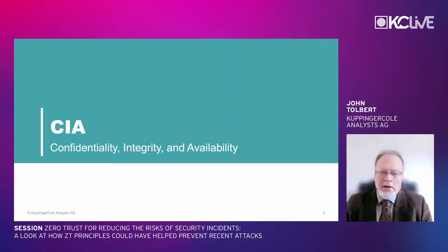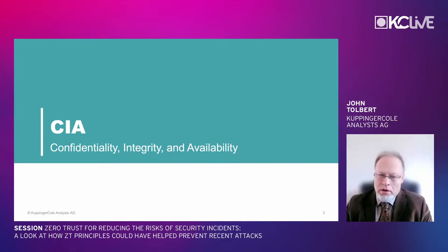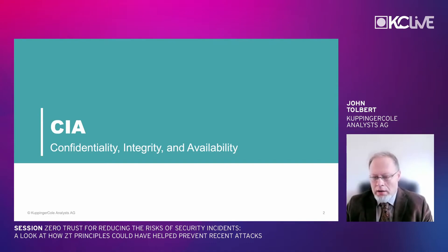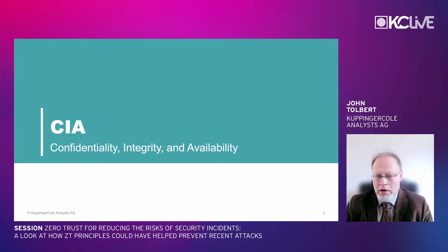Today's topic begins with core security concepts: CIA — confidentiality, integrity, and availability. In the context of zero trust, confidentiality means not allowing unauthorized access to information or resources, integrity means preventing those resources from being changed by unauthorized parties, and availability is simply keeping services and resources up and running.